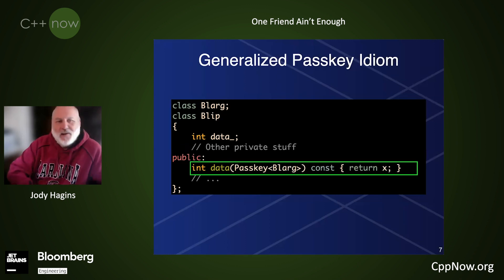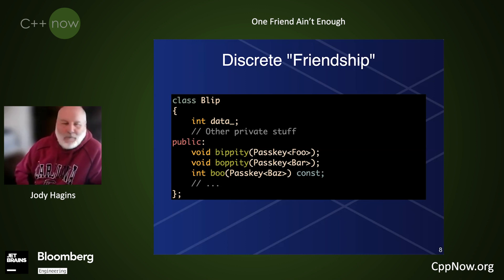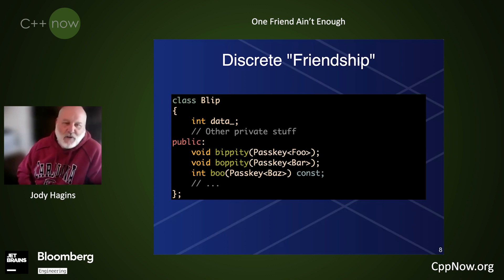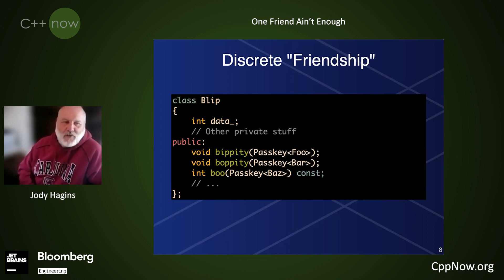It can be generalized with templates, and it can be used to grant discrete friendship to different parts of the class through multiple functions. So if you have a passkey foo, then you can call bippity. If you have a passkey bar, then you can call boppity. And if you have a passkey baz, then you can complete the trifecta and call boo.